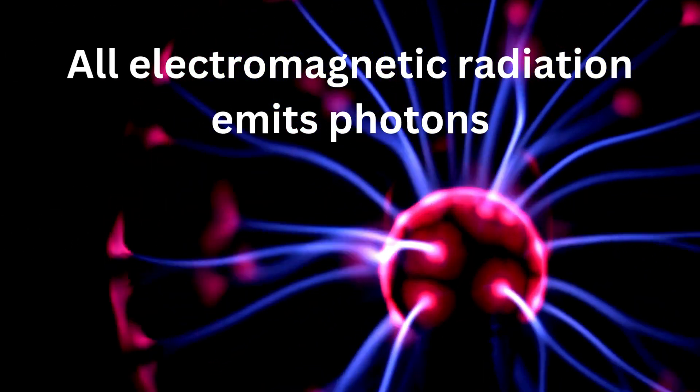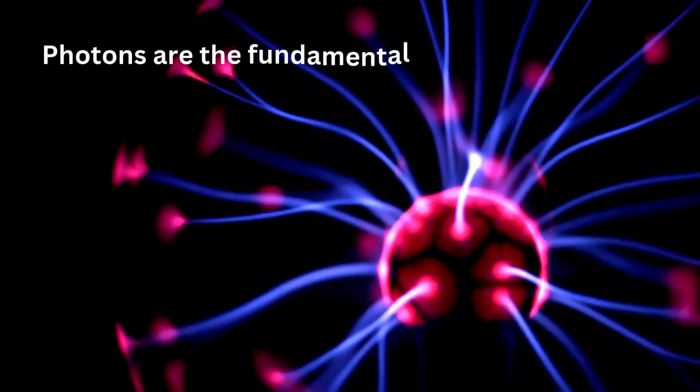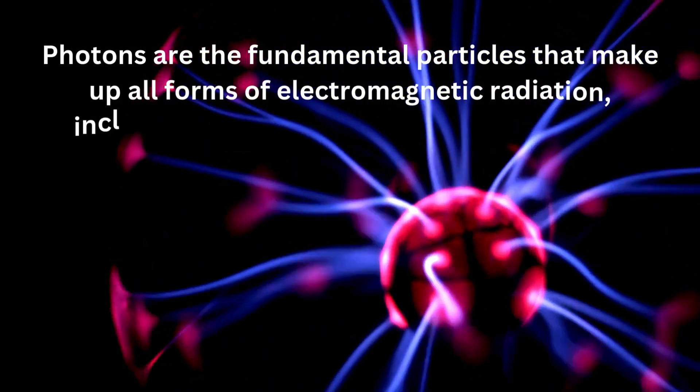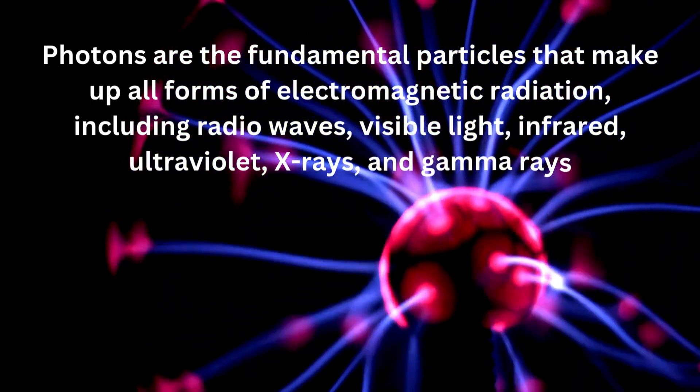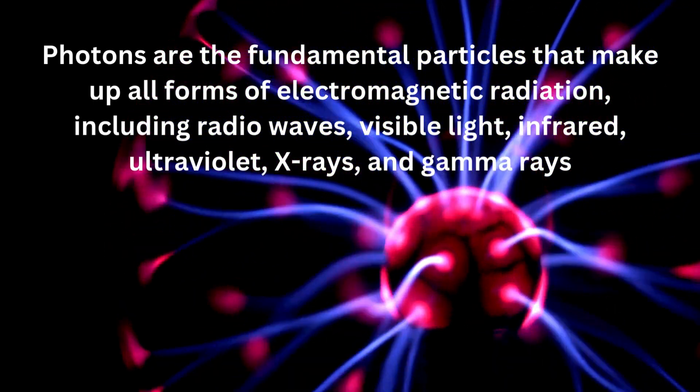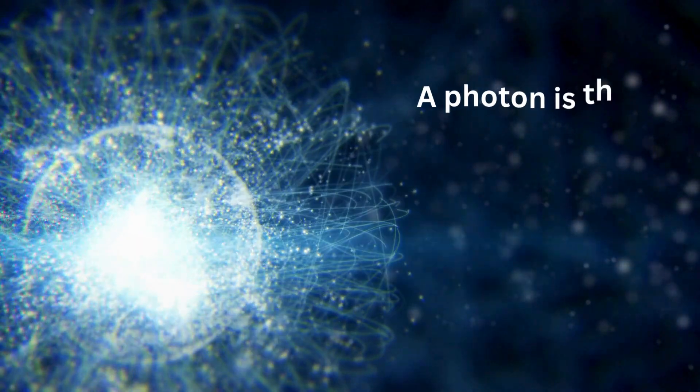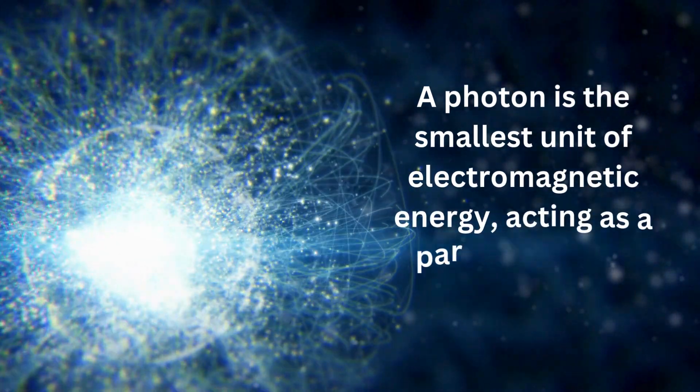All electromagnetic radiation emits photons, as photons are the fundamental particles that make up all forms of electromagnetic radiation, including radio waves, visible light, infrared, ultraviolet, x-rays, and gamma rays. The only difference between these types of radiation is the energy level of their photons. A photon is the smallest unit of electromagnetic energy, acting as a particle of light.